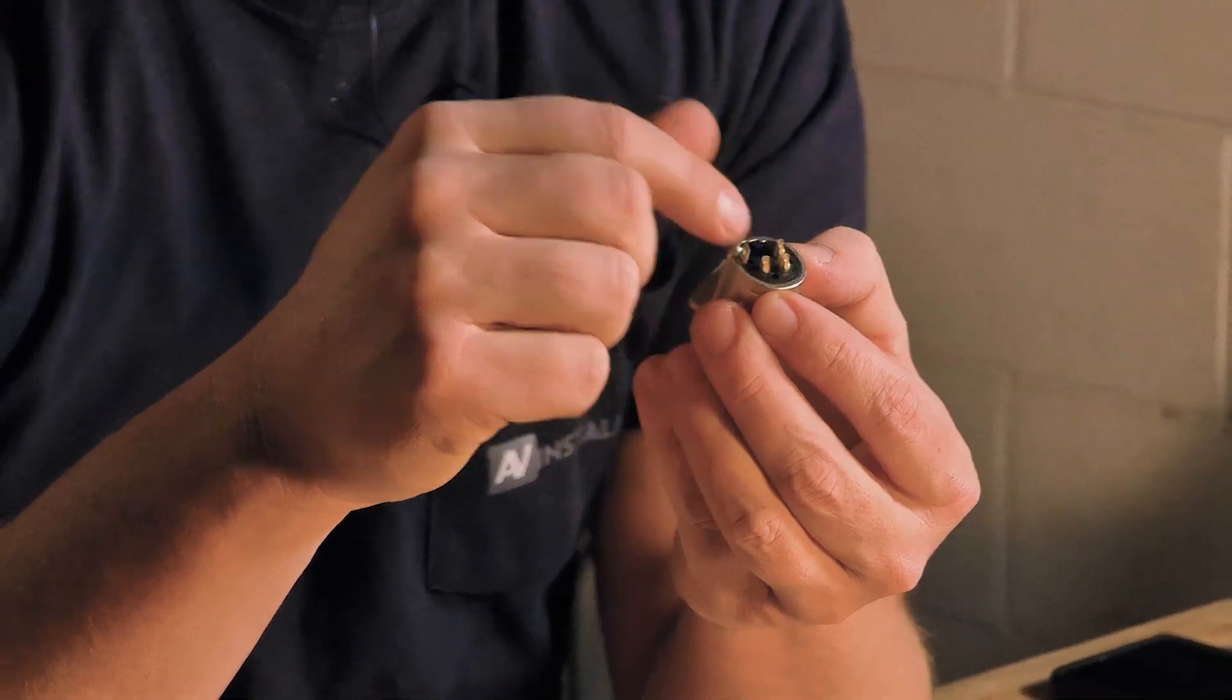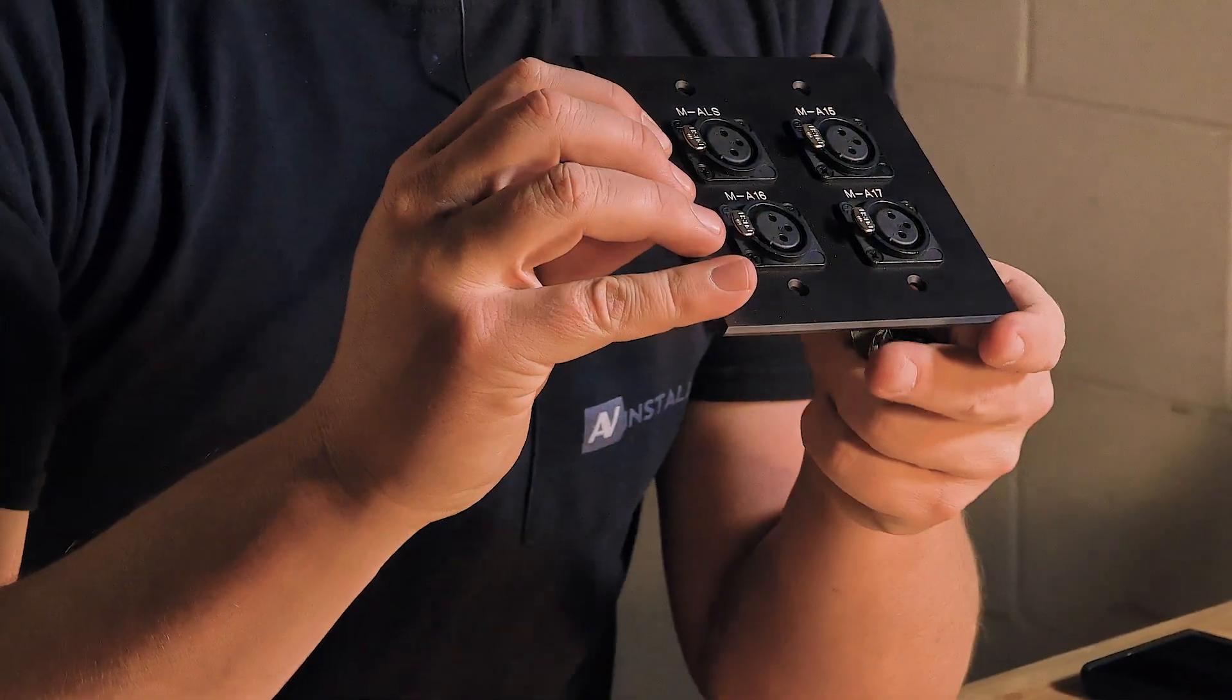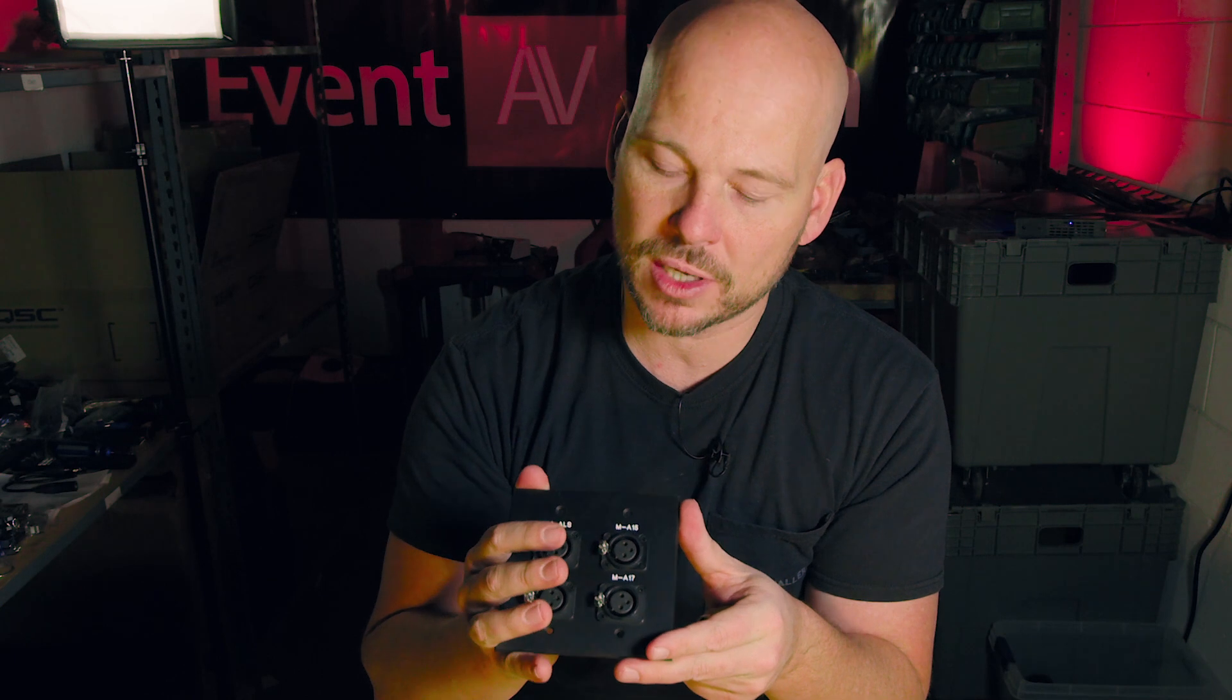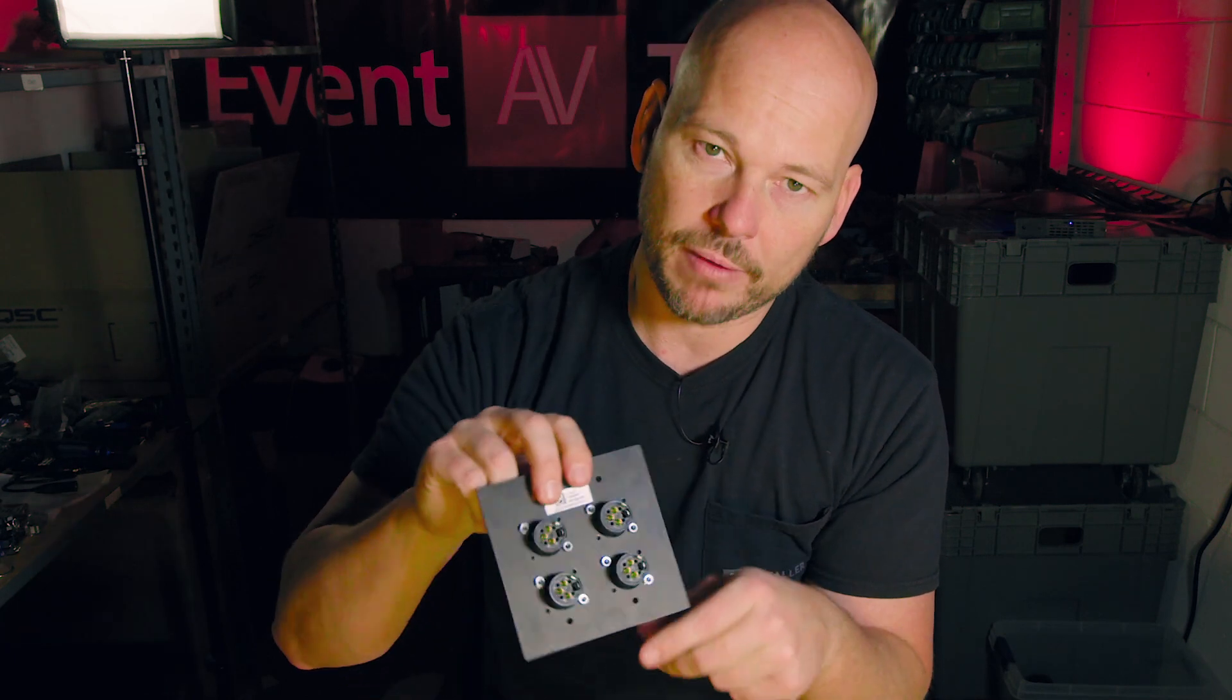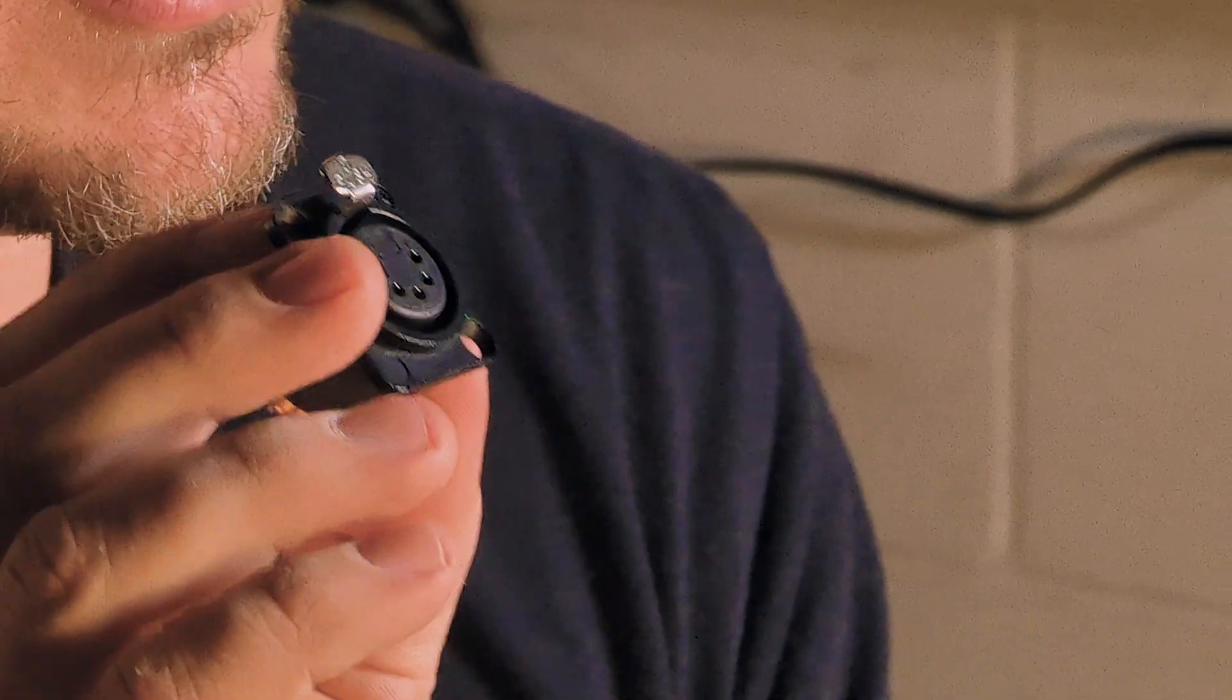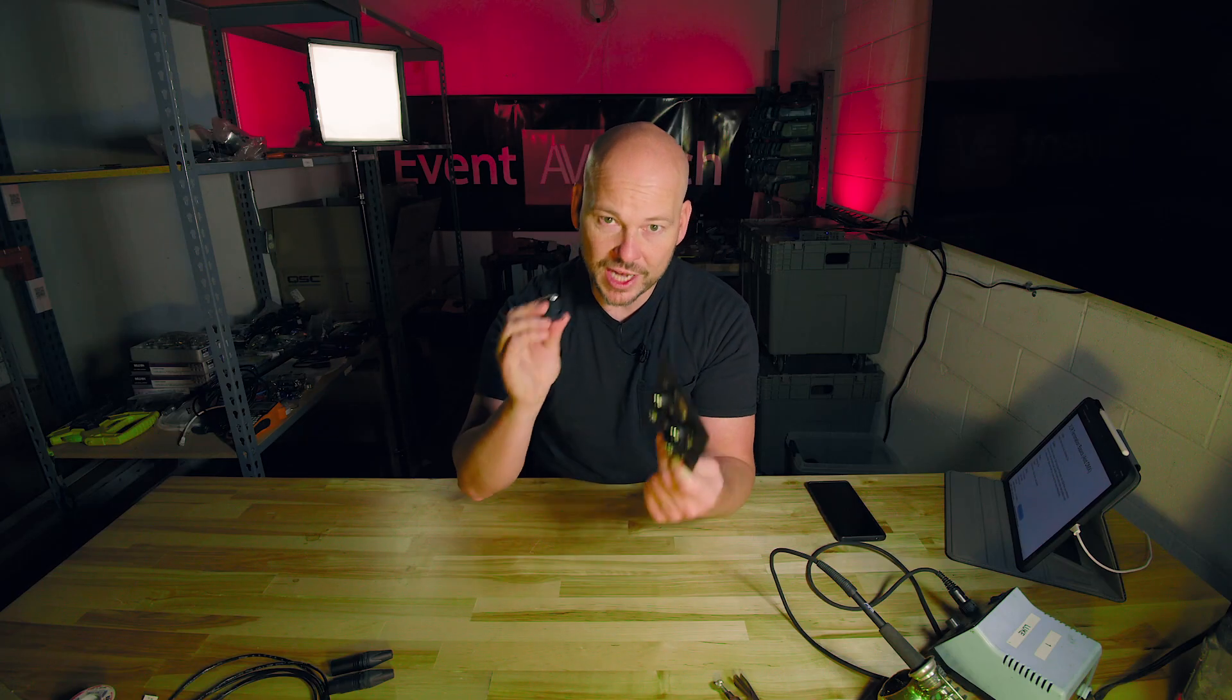This is what it looks like when it's just all by itself. You can see this is the female side and then right there, this is where we would be doing our soldering. We're going to talk about some details of how to solder these up. This is what it would look like if it's actually built into a wall plate, which is real common for us in the integration world. And so you'd have multiple on the back end of it. And then I also have a 5-pin chassis mount right here, and this is for DMX lighting.